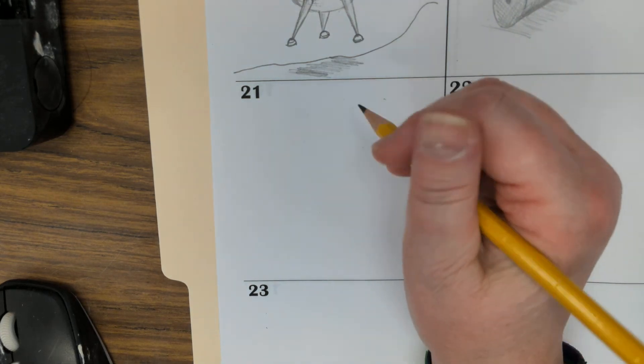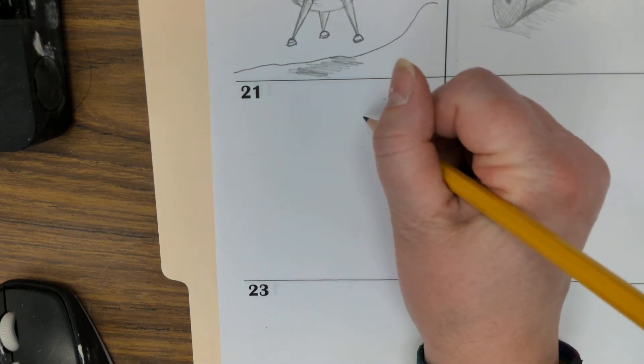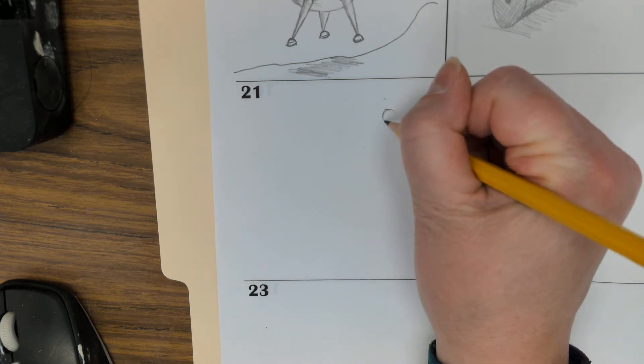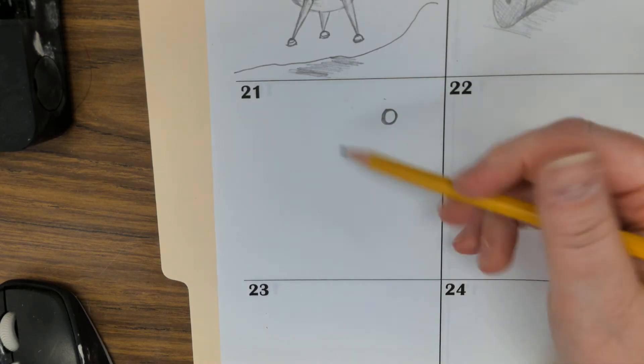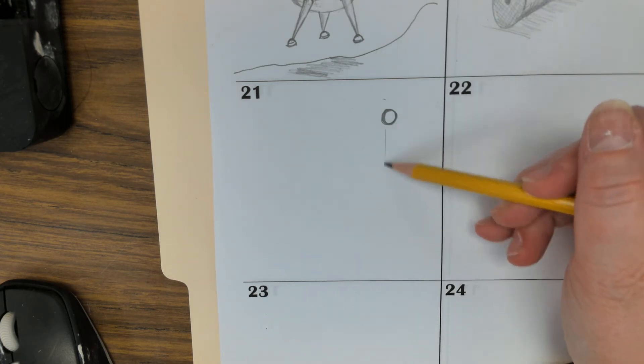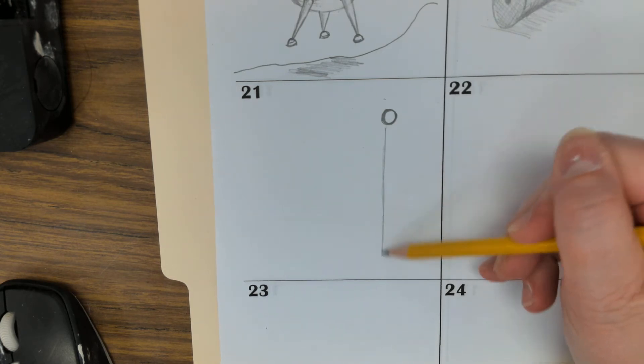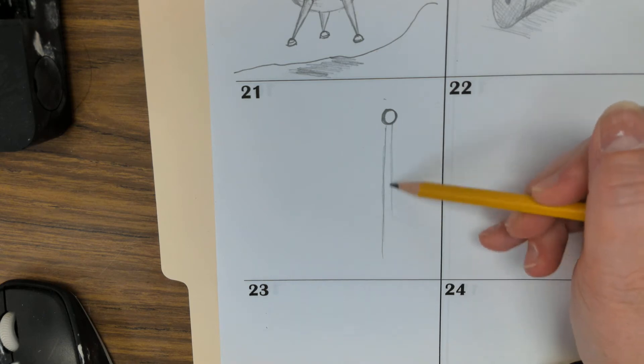Today you're going to complete warm-up 21. We're going to start with a circle and a vertical line. We're going to make that a double. It'll become our flagpole.